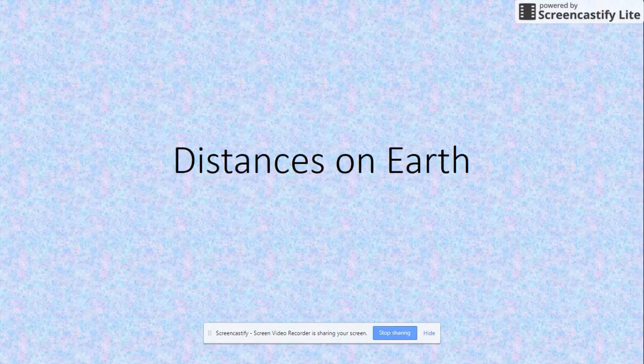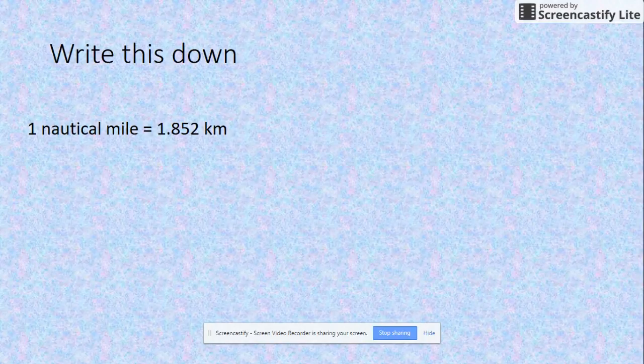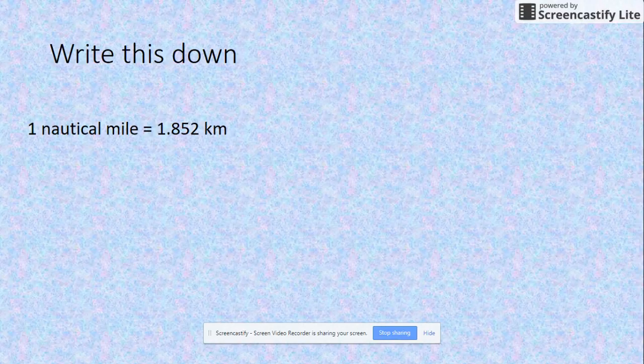Okay, so we're looking at distances on Earth and how to work them out. First of all, I want you to write this down: one nautical mile is equal to 1.852 kilometers. That's important, so make sure you've got that.